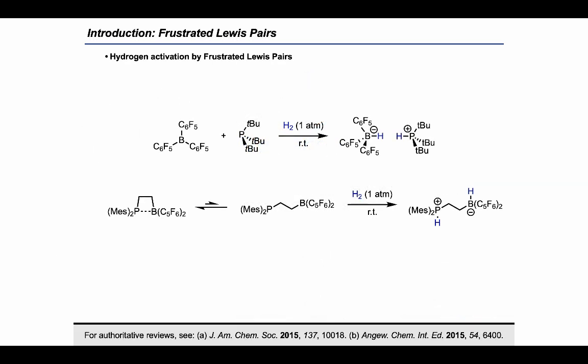The research project that I want to present today is inspired by the chemistry of frustrated Lewis pairs. Frustrated Lewis pairs are combinations of sterically encumbered Lewis bases and highly Lewis acidic boranes that do not form adducts and are able to activate strong chemical bonds, such as the one of dihydrogen. I show you here one example of an intermolecular frustrated Lewis pair and one example of an intramolecular frustrated Lewis pair.